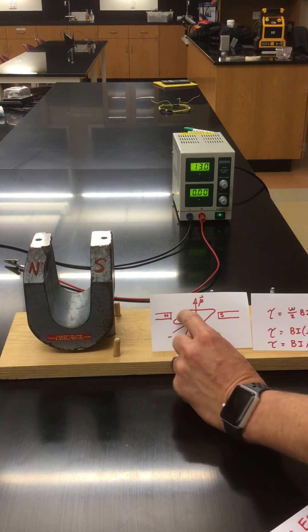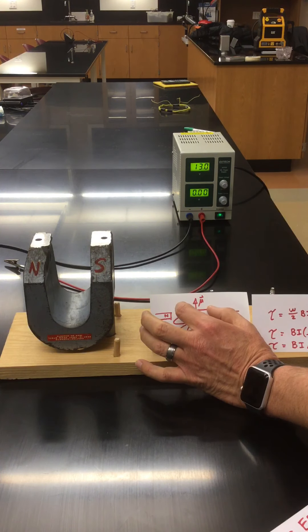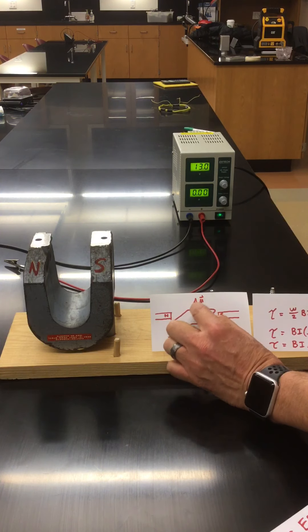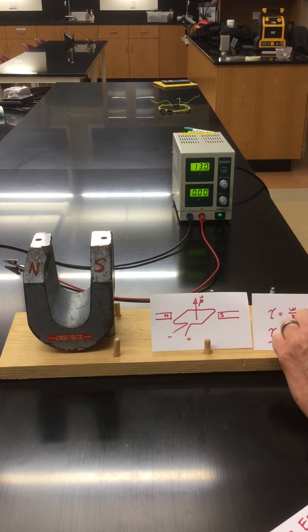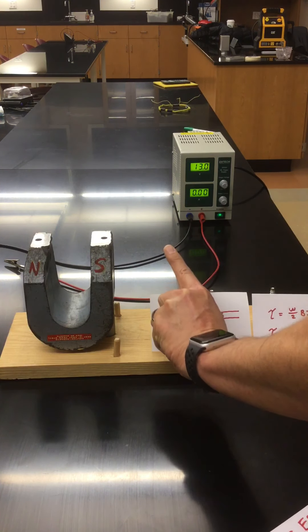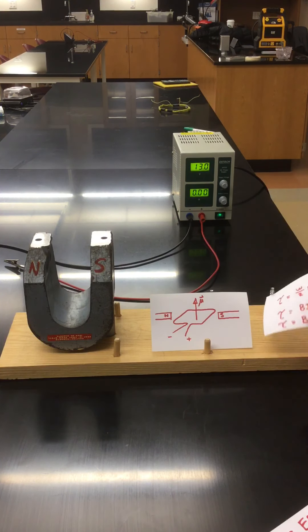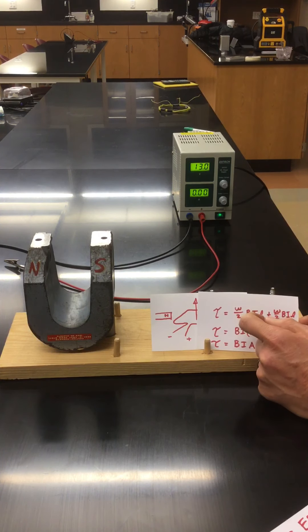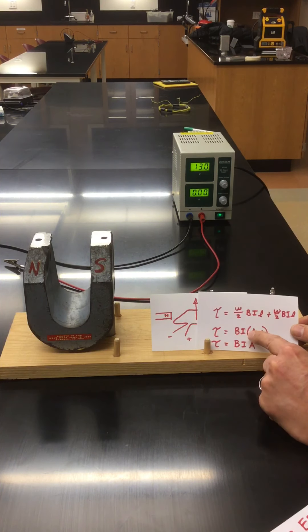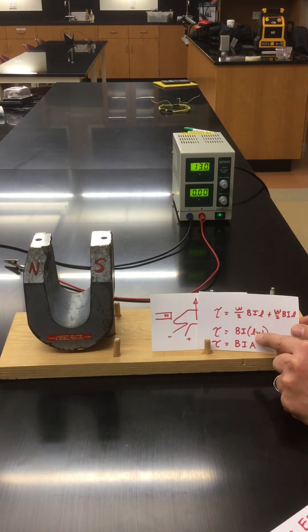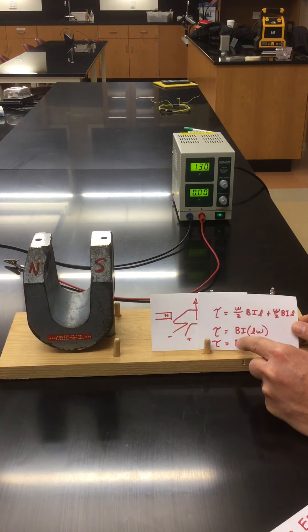The upward torque on this segment of wire has a lever arm of, let's call the width of this loop, W. Then from the midline axis of rotation, there's a lever arm of W over 2 and a force of BIL. So that expresses the upward force. This segment of wire has the same amount of force downward, W over 2 times BIL. So if I add those together, I get 2 times W over 2 times BIL, which would give me B times I times L times W. But we recognize the length times the width is simply the area of that loop, so torque equals BIA.